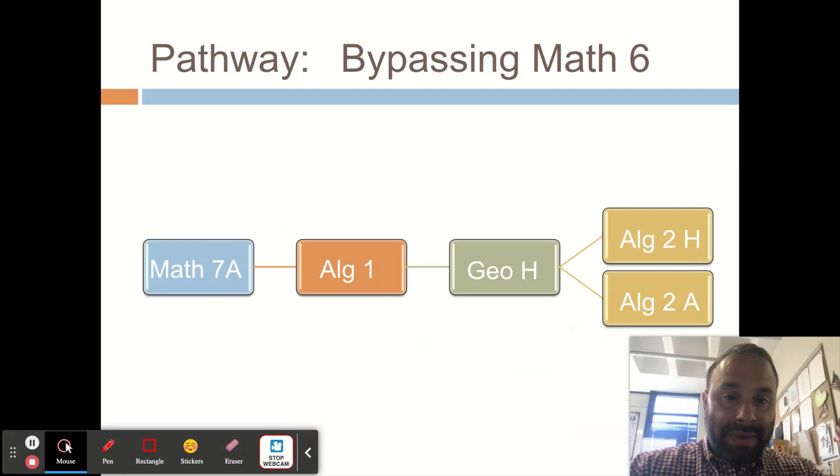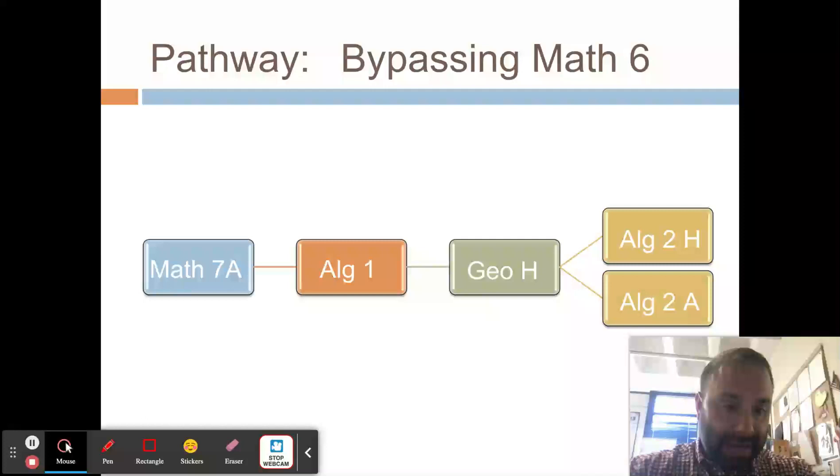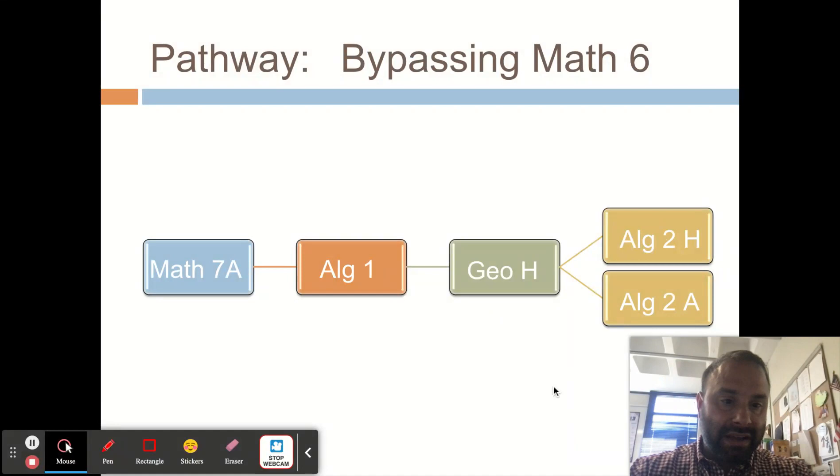If you bypass Math 6, in sixth grade, they would be in the Math 7A class. In seventh grade, they would be in Algebra 1. In eighth grade, we do have in our eighth grade, a Geometry class. And then when they enter the high school, they'll have a choice to either enroll in Algebra 2 Honors or Algebra 2 A.